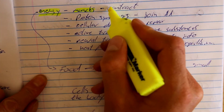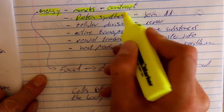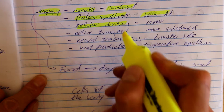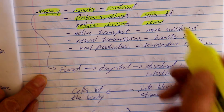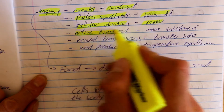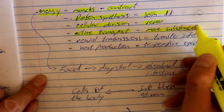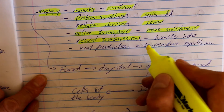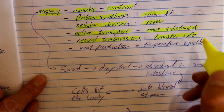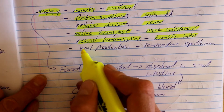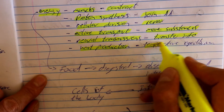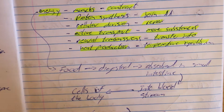So in this chapter we're talking about respiration and energy. Energy is needed for many processes: muscles require energy for contraction, protein synthesis requires energy to join amino acids together, cellular division requires energy for repair and regeneration, active transport requires energy to move substances into or out of cells, neural transmissions require energy to transfer information across neural pathways, and heat production also requires energy to regulate temperature and maintain equilibrium.